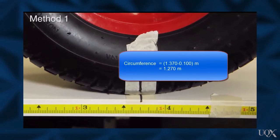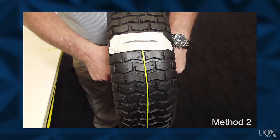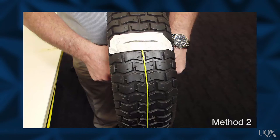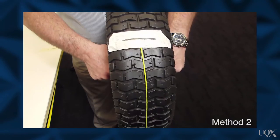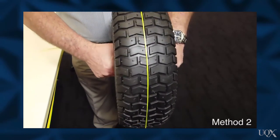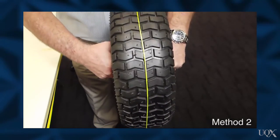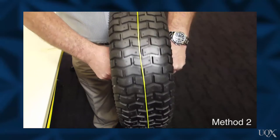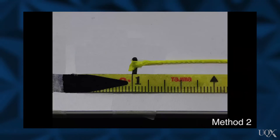The circumference is therefore the difference between these positions. The wheel circumference can also be estimated by winding a string around the wheel. The length of string required will be marginally longer than the true circumference — the thickness of the string introduces a small error.